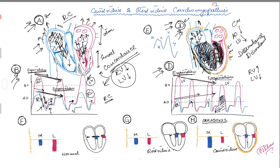This discordant waveform is what we want to see when we send somebody with suspected constrictive cardiomyopathy to the cath lab — this is called the constrictive-restrictive study. During expiration on picture D, as RV filling increases, LV filling and LV pressure go down.